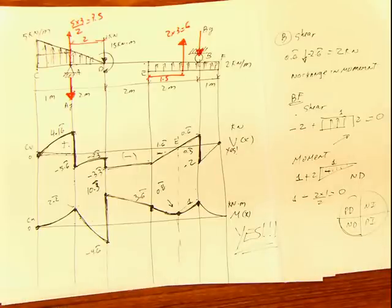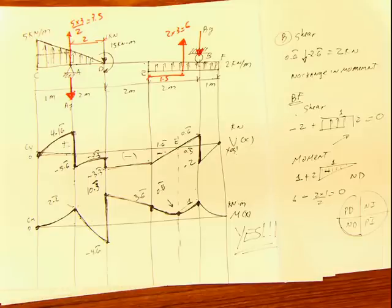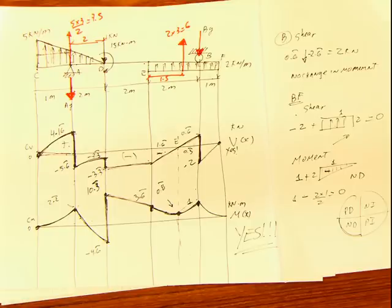So guys, another example done. We started with integrals and switched to areas. We can start with areas and switch to integrals, or start with sections and switch to integrals or areas. Use whatever method is easier for you at that particular moment. I hope you liked this one, because I'm working hard to give you the most solved problems I can. No excuses. See you in the next video. Have a good day.